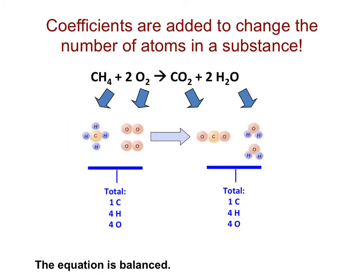Coefficients are added to change the number of atoms in a substance. If we look at the chemical equation seen here, which is a combustion reaction because I see elemental oxygen as a reactant, you will notice that there are coefficients within the equation. Those coefficients were necessary to make sure that the number of atoms of each element on the reactant side equaled the number of atoms of each element on the product side — thus, a balanced equation.